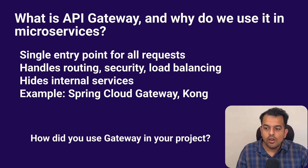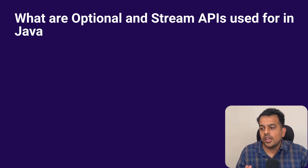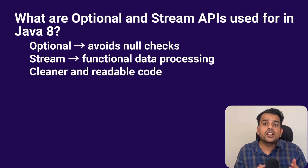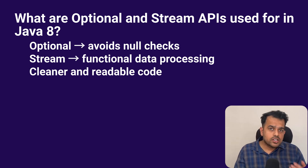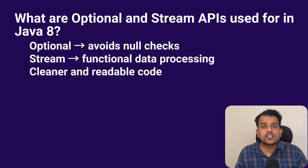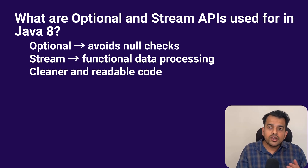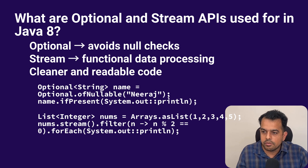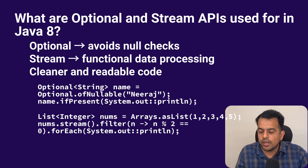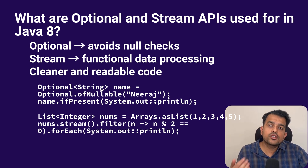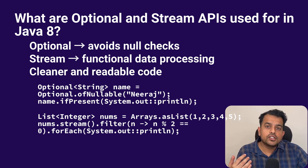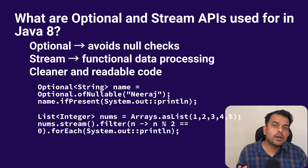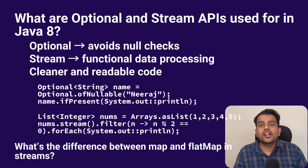Next was a Java 8 question: what are Optional and Stream APIs in Java 8? Optional is used to avoid NullPointerExceptions — it represents a value that may or may not be present. Stream API is used to process collections in a functional style, like filtering, mapping, or reducing data. Together they make code cleaner and more readable. On screen there is an example of Optional and then an example of Stream API code. A possible follow-up is: what is the difference between map and flatMap? Map transforms each element while flatMap flattens nested lists.